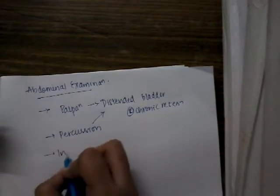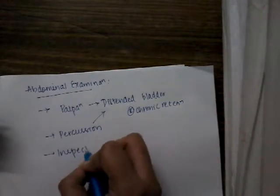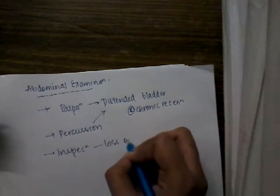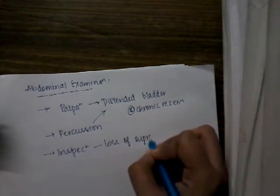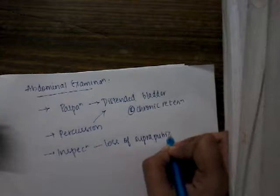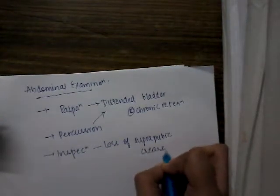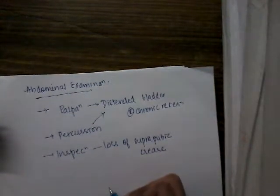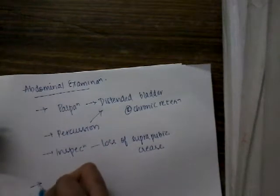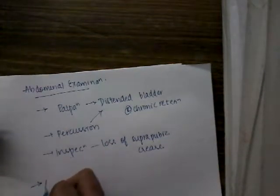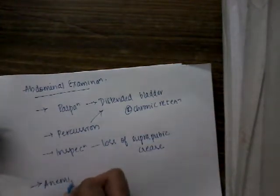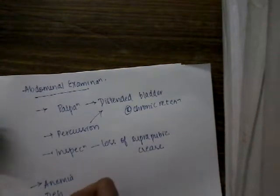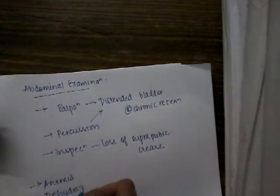On inspection, there is loss of suprapubic crease which is present because of distension of bladder. You should examine for anemia and also signs of dehydration. These are additional signs.